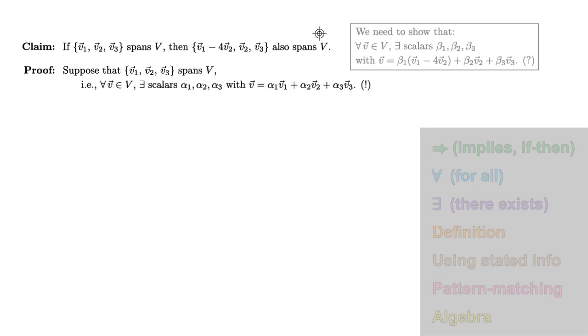Now that we've written out the definition of what we need to show, it tells us what to do next in our proof. Since it's a for all statement, we let v in V be given. What we'll need to do next is to find three scalars beta1, beta2, and beta3 to prove our there exists statement.